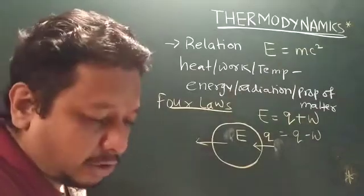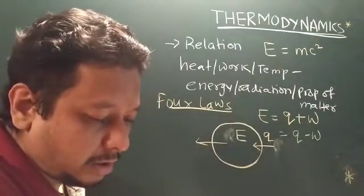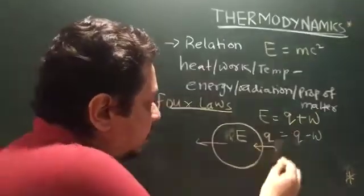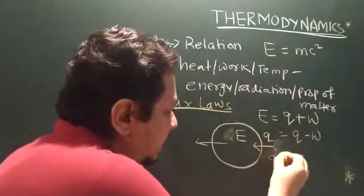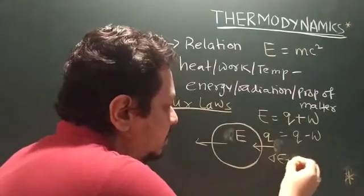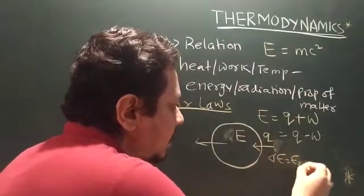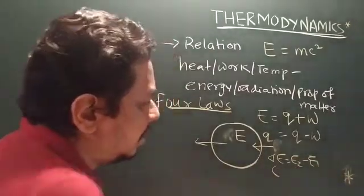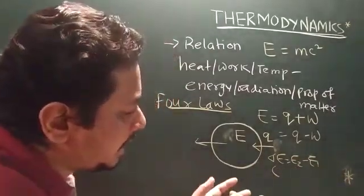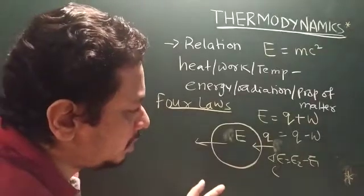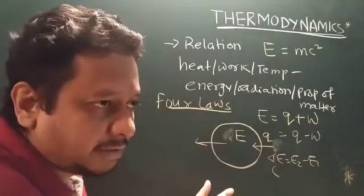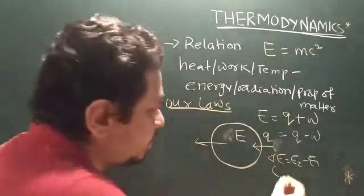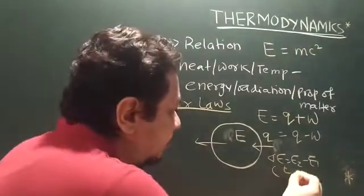After the first law, it is important to note that the total internal energy, which is E2 minus E1, is based on other physical parameters — that is, temperature, pressure, and volume. This is a very important concept to understand.